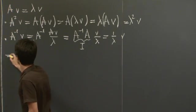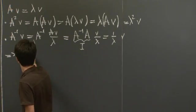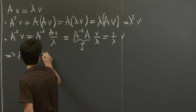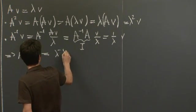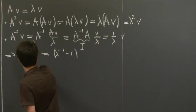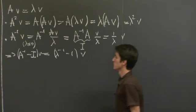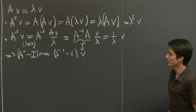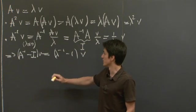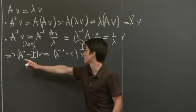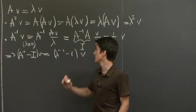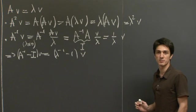And from here, of course, A inverse minus the identity is lambda inverse minus 1 V. So the eigenvalue of A inverse minus the identity is 1 over lambda minus 1.